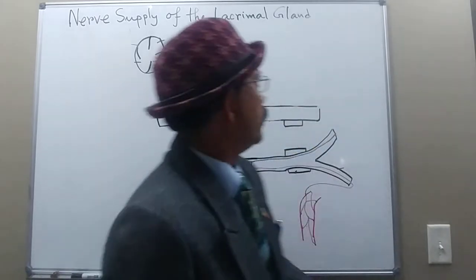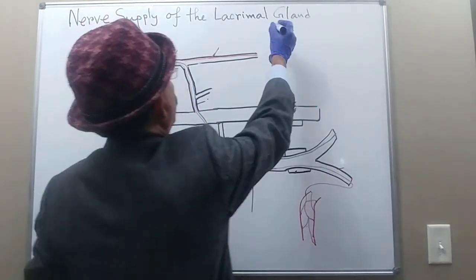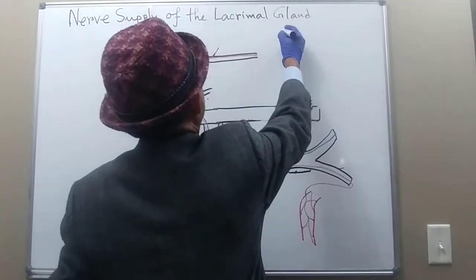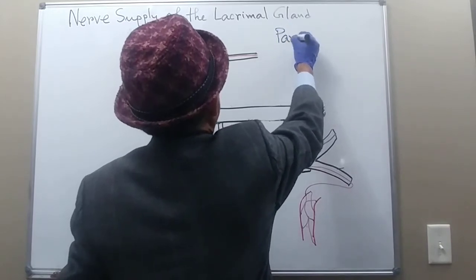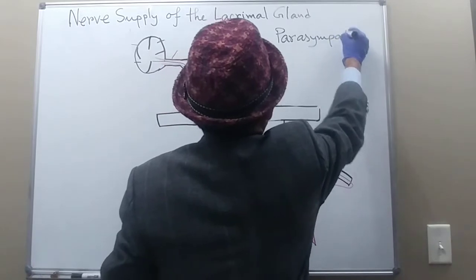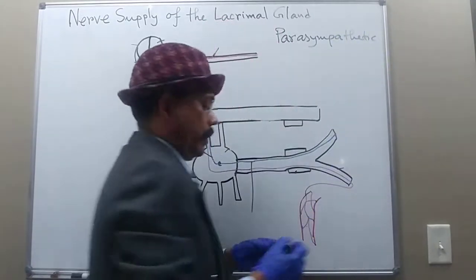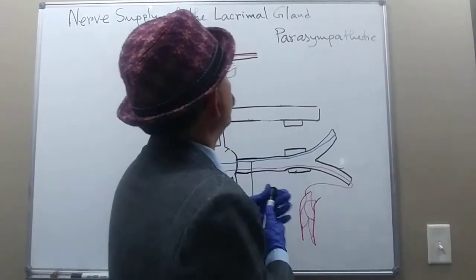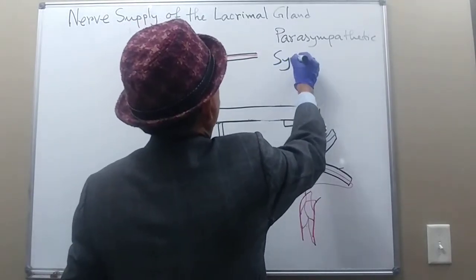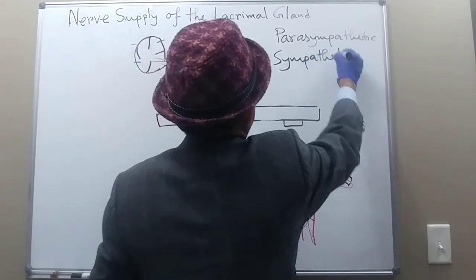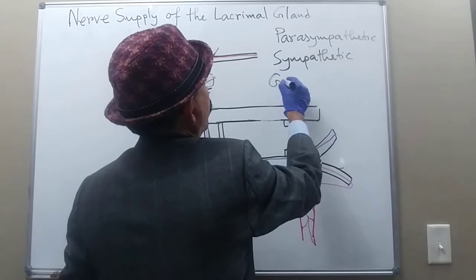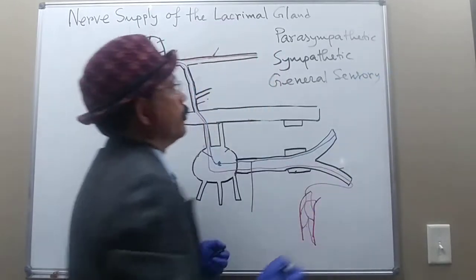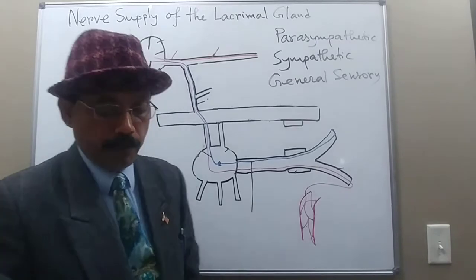The lacrimal gland has three types of nerve supply. Since it is a gland, it has secretomotor fibers — those are parasympathetic, so parasympathetic innervation. This gland also has sympathetic innervation, and it also has general sensory innervation. So it has three types of innervation. We will go through them one by one.